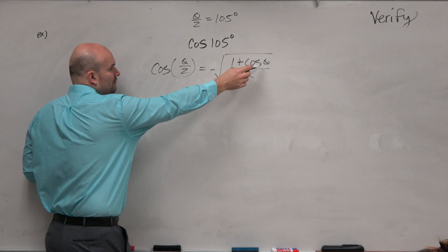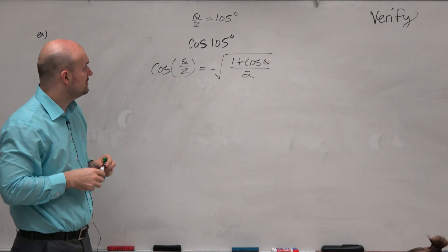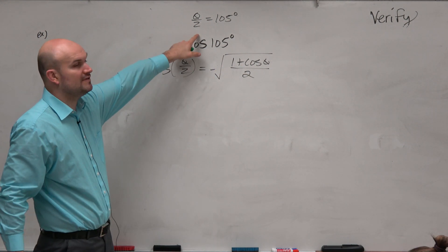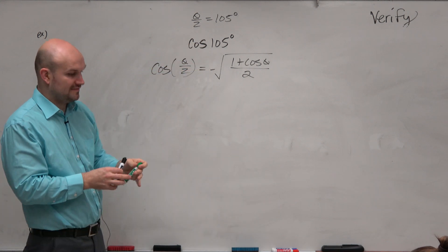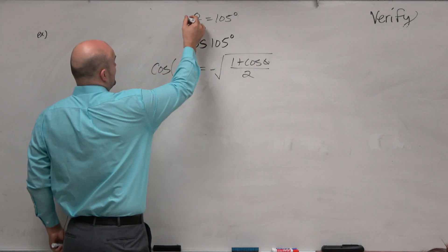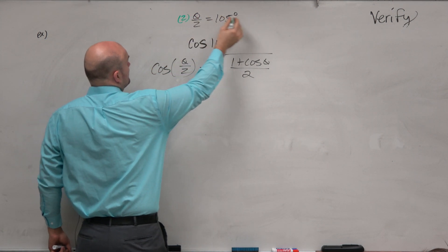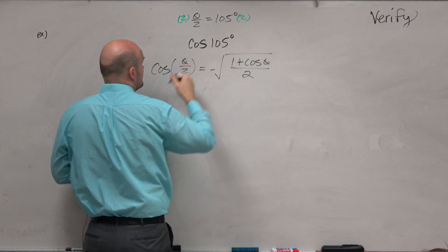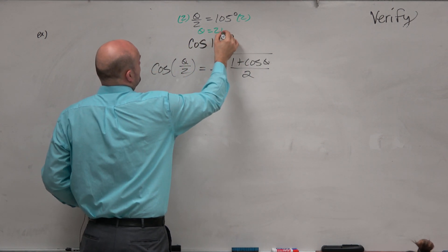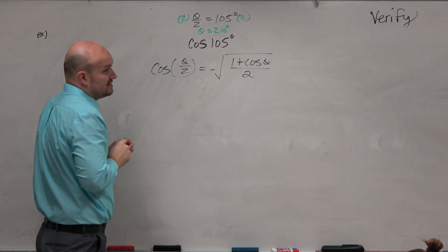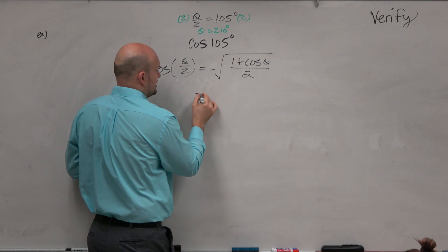All right, now the formula asks us for theta. But we have theta divided by 2 is 105. So that means theta has to be 210. So guys, all we're simply going to do now is just plug it in.